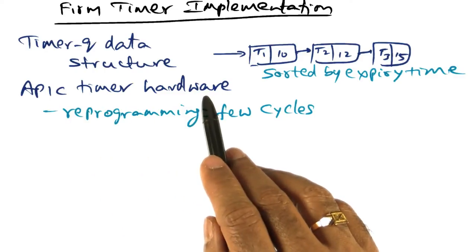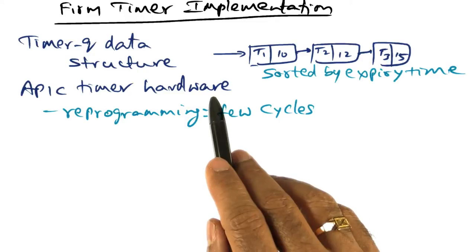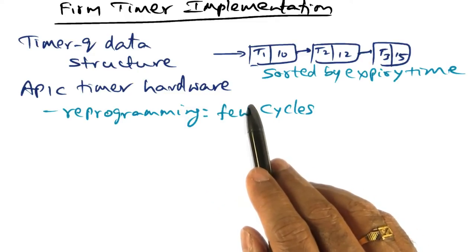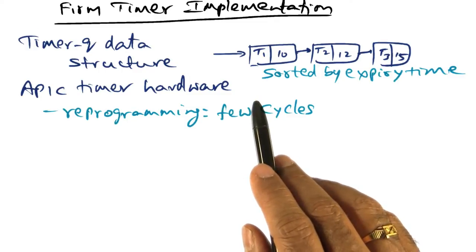The way the APIC timer hardware works is by setting a value into a register which is decremented at each memory bus cycle until it reaches zero, at which point it will generate an interrupt.